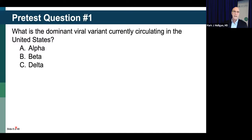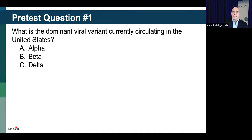Let's start with a pretest question: What is the dominant viral variant currently circulating in the United States? Your options are alpha, beta, or delta. The poll is open — please click on your response.